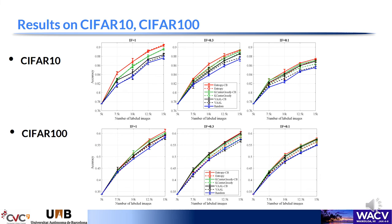Here we see the accuracy of the model on CIFAR-10 and CIFAR-100 with several imbalance factors. The dashed lines represent the baselines and solid lines represent the addition of class balancing to the baselines. The plot shows that class balance methods improve the baselines, especially on the datasets that are heavily imbalanced.